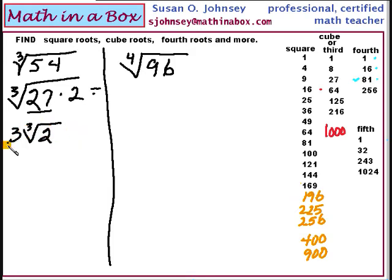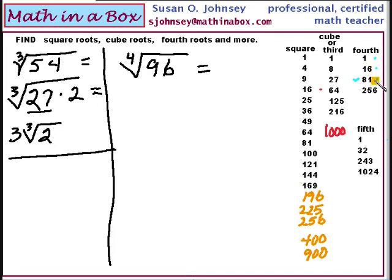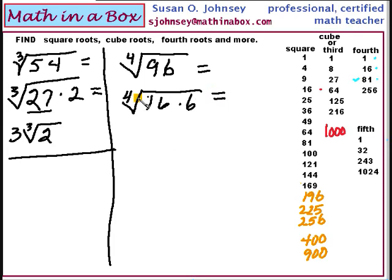Let's try a fourth power problem. Look at your list — what will divide evenly into 96? 16 does; 81 won't. 16 times 6 is 96. The fourth root of 16 is 2 — we know this one, it's on our list. The fourth root of 6 we do not know, so we leave it as the fourth root of 6. The answer is 2 times the fourth root of 6.